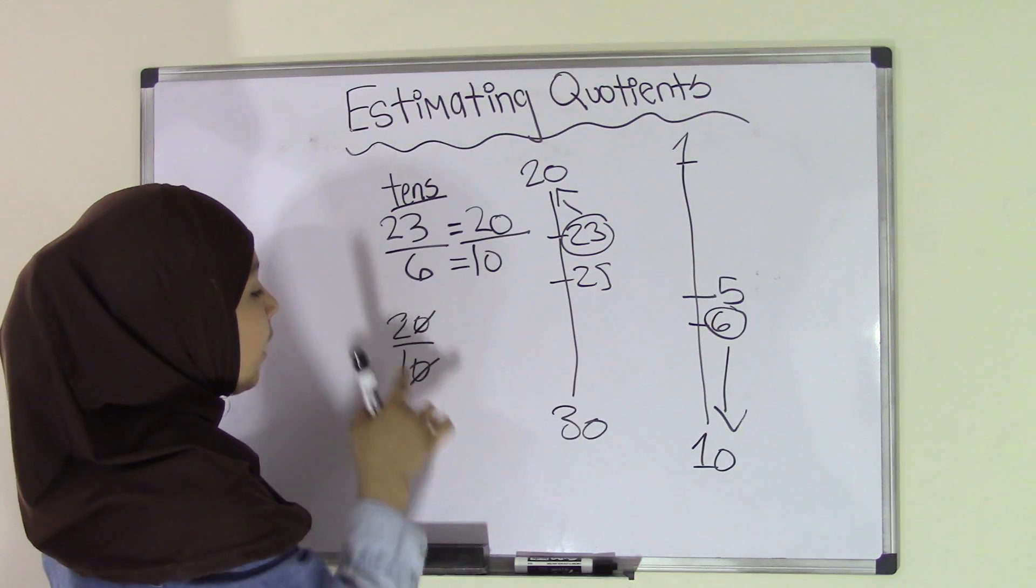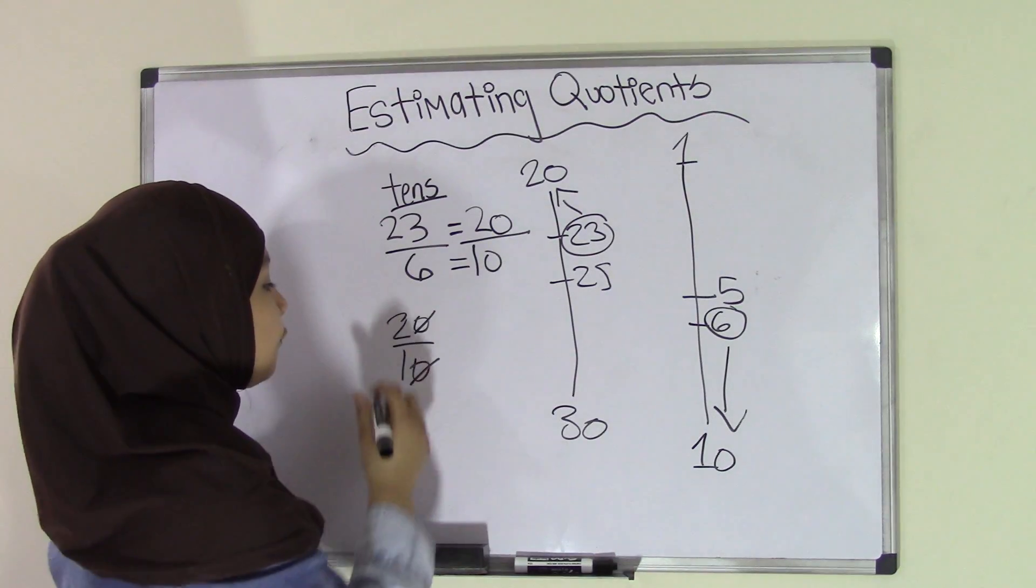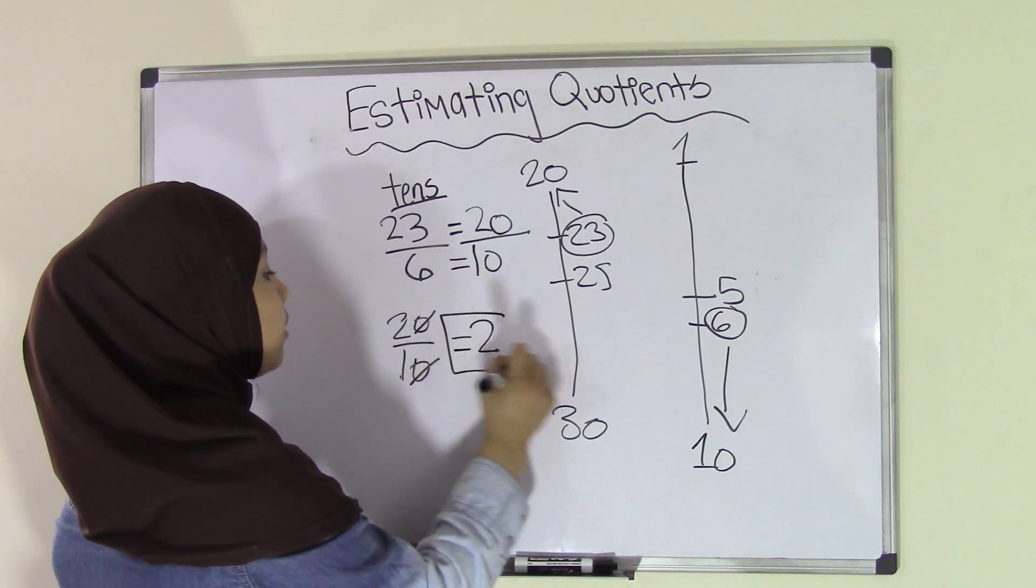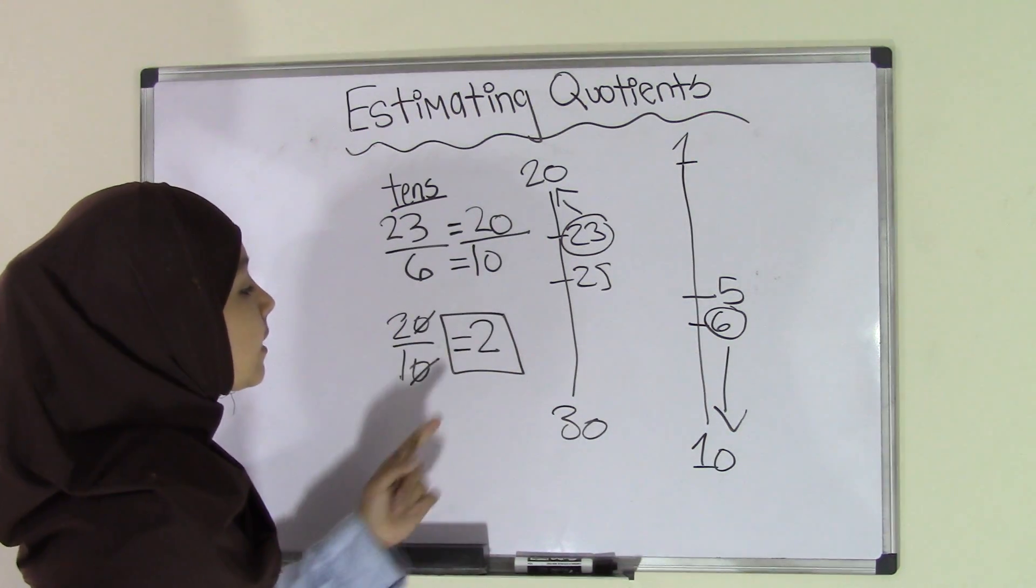Now we're going to look for 2 divided by 1. And any number divided by 1 equals that number. Therefore, 2 divided by 1 equals 2. So our quotient, our estimated quotient for 23 divided by 6 equals 2.